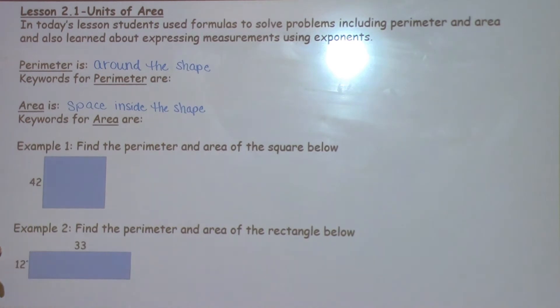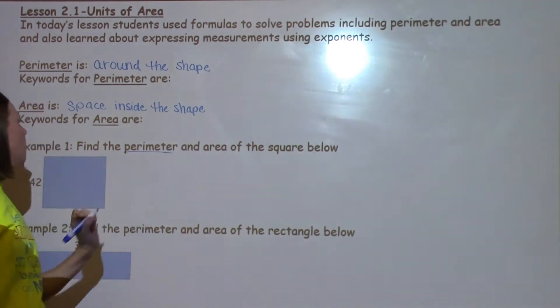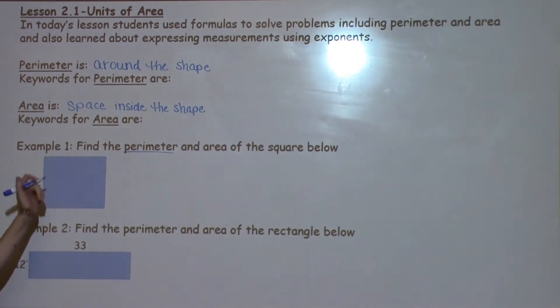For example 1, we're going to find the perimeter and the area of the shape below. First of all, I'm going to find the perimeter. When I find the perimeter, I add all of the sides. So this is a square, so I know this is going to be also 42, 42, and 42. This is going to be in feet.